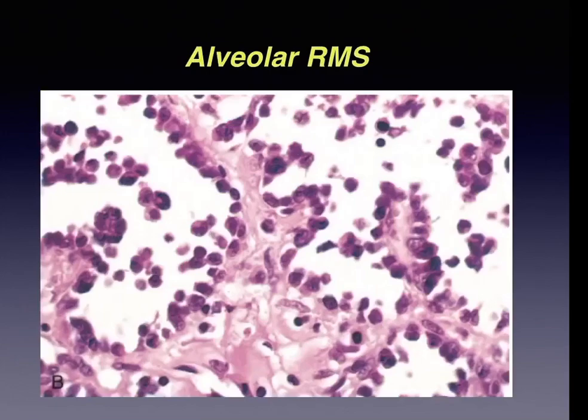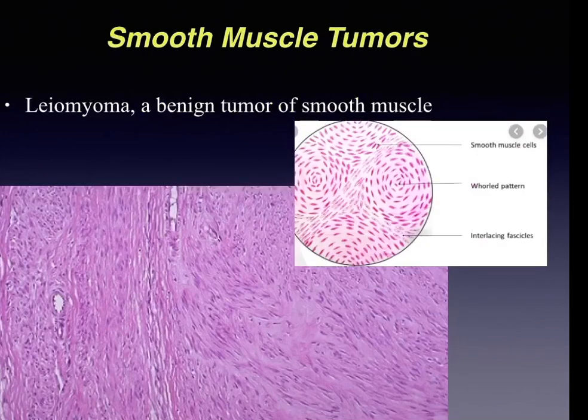Alveolar rhabdomyosarcoma shows a network of fibrous septae dividing tumor cells into clusters or aggregates, roughly resembling pulmonary alveoli — hence the name alveolar rhabdomyosarcoma.